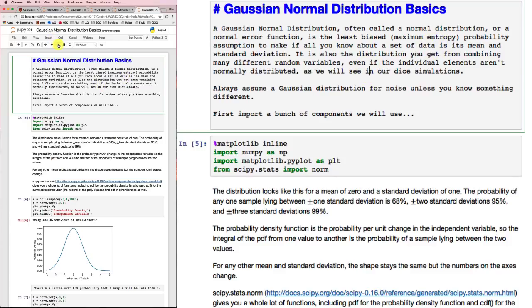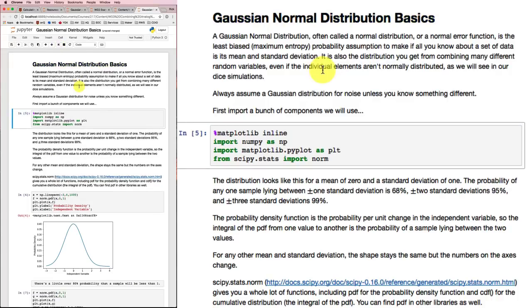So I'm just updating this Python notebook as we go along to correct some of my typos. And you can follow along in the Python notebook called Gaussian Normal Distribution Basics so that you can try out some of this code yourself.